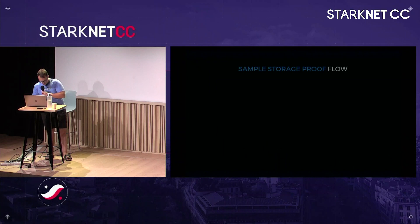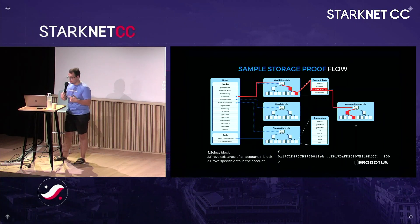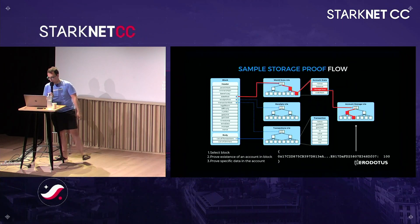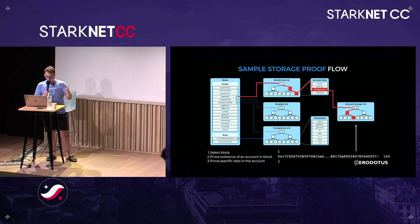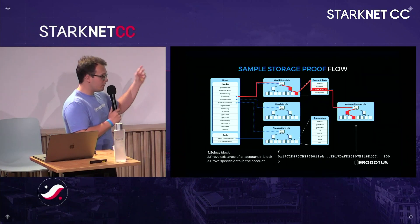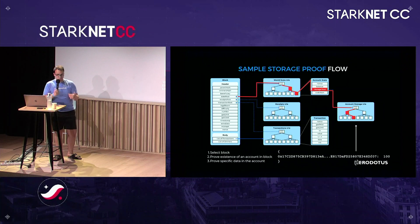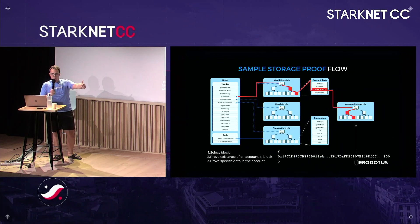Block headers actually have three roots we should care about: state root, receipts root, and transactions root. These hashes are the root of a Merkle tree — more precisely a Merkle Patricia tree. In Merkle trees, you can commit to some data set and prove the inclusion of specific leaves in that tree. In Ethereum, we flush the state table into this tree. If we can verify a Merkle inclusion proof and upload the proof, we can access the information.